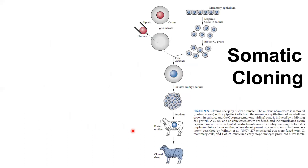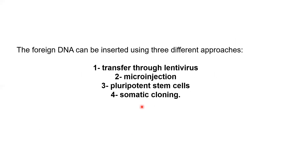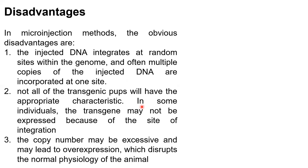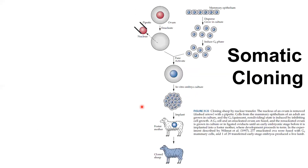The fourth method of creating transgenic animals is somatic cloning. In somatic cloning, it is not germline cloning. You take one organism A and harvest its mammary epithelium cells, culture and grow them, then disperse them. Mammalian cells are anchorage-dependent, so enzymatic, non-enzymatic, or mechanical methods are used to disperse them. They are then induced into the G0 phase — a resting phase — so they stop cell cycling.